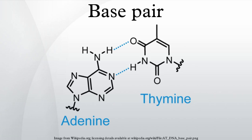An unnatural base pair is a designed subunit of DNA which is created in a laboratory and does not occur in nature. DNA sequences have been described which use newly created nucleobases to form a third base pair, in addition to the two base pairs found in nature — AT and GC. A few research groups have been searching for a third base pair for DNA, including teams led by Stephen A. Benner, Philippe Marlière, Floyd Romesberg, and Ichiro Hirao.